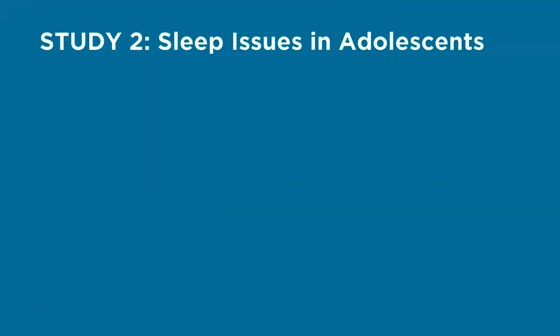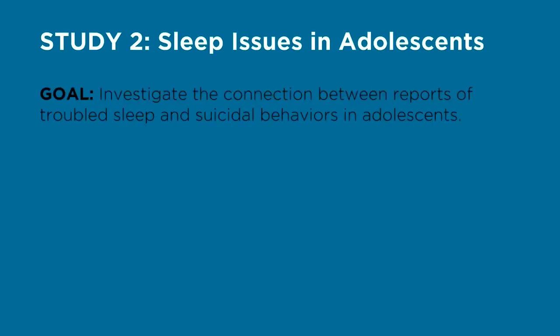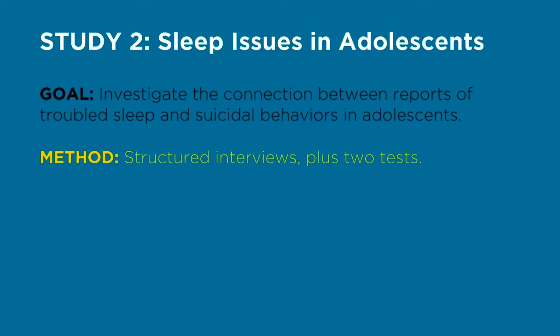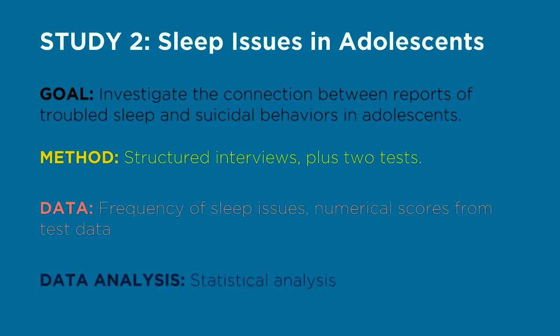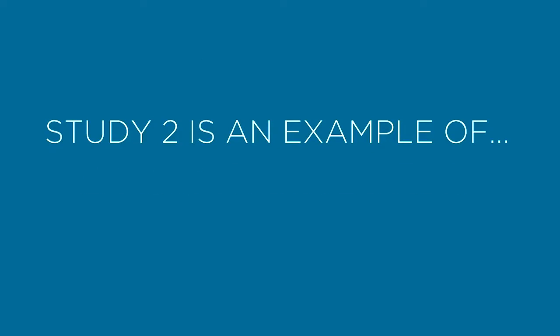Our second example is about sleep issues as a risk factor for suicidal behavior in depressed children and adolescents. The goal of this study was to investigate the association between sleep complaints and suicidal behaviors in this population. The method was a structured interview about sleep — the same questions for every participant — plus two tests: the Children's Depression Rating Scale and the Children's Global Assessment Scale. The data consisted of frequency of sleep issues from the interviews, as well as a numerical score for the two scales. Researchers used statistical analysis and presented results using tables. This is an example of a quantitative study.